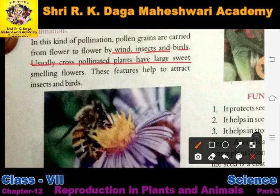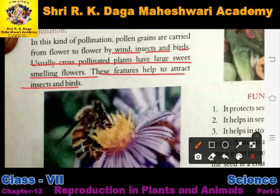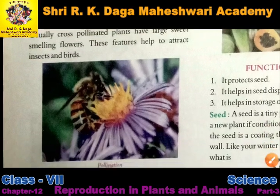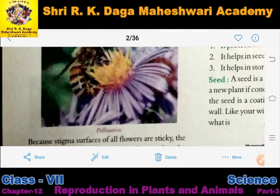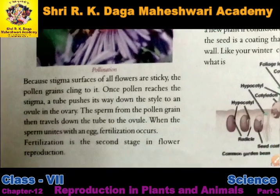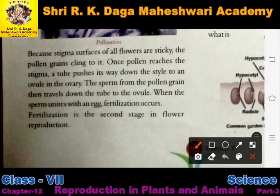Usually cross-pollinated plants have large, sweet-smelling flowers. Jo cross-pollinated plants hote hain unme bahut sweet smelling flowers hote hain — unki smell bahut achhi, bahut pleasant fragrance hoti hai. These features help to attract insects and birds, because their pleasant smell draws birds and insects towards them.